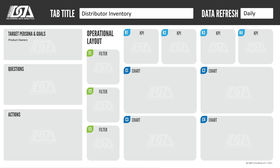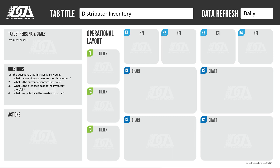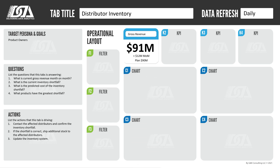Since our end users are the product owners, we will use an operational type of layout. In this layout, we put our navigation at the top, key performance indicators below those, and our charts and filters occupying the main portion of the dashboard. Since we have a goal of increasing gross revenue, let's put a KPI in there to reflect that. As we report out monthly, we'll add a month-on-month trend to that KPI.